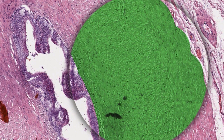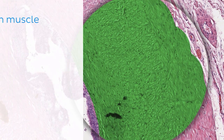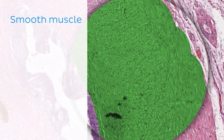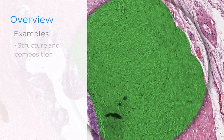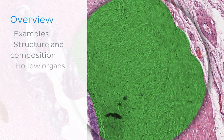The third muscle tissue type is what we'll be focusing on in this tutorial, and this is of course smooth muscle. We can see an example of smooth muscle tissue in this micrograph here. This type of tissue can also be referred to as involuntary muscle because its activity is neither initiated nor monitored consciously. In this tutorial we'll be looking in more detail at smooth muscle, particularly at where it can be found in the body, its structure and composition, and finally how it is structured in hollow organs such as the digestive tract.